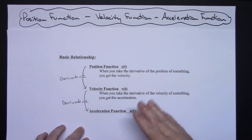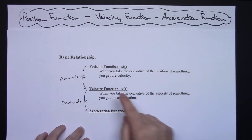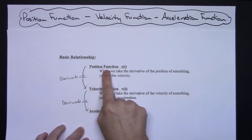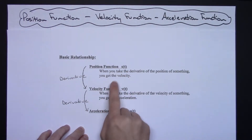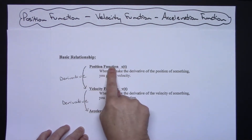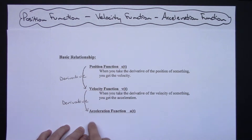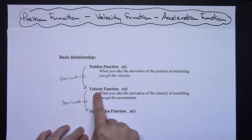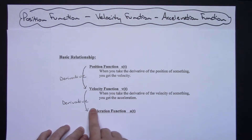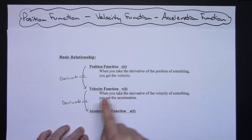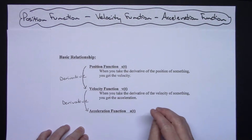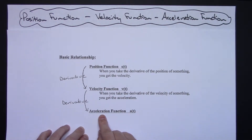The first thing you need to know is the relationship between these functions and derivatives. Your position function is usually denoted by s of t. Whenever you take the derivative of the position of something, you automatically get the velocity. If you're given the velocity function — which is usually denoted with v of t — when you take the derivative of the velocity, you get the acceleration function.